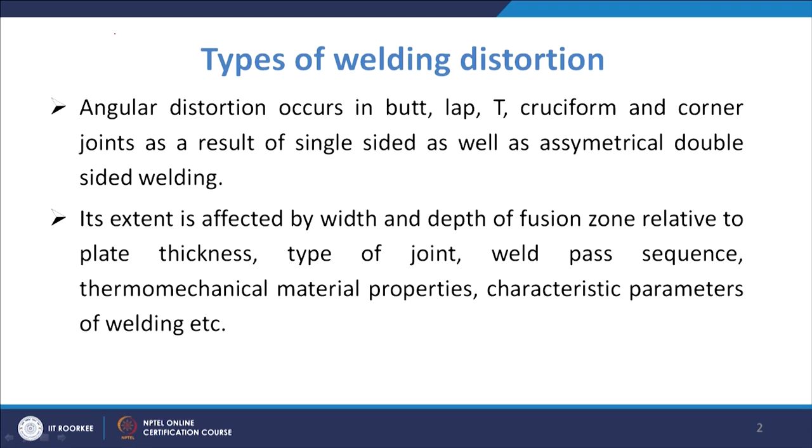The extent of angular shrinkage depends upon many factors: the width and depth of the fusion zone relative to the plate thickness, the type of joint, the weld pass sequence, thermomechanical material properties, and characteristic parameters of the welding processes. You also have heat input per unit length and the distribution of heat source intensity — these factors basically affect the extent of angular distortion.